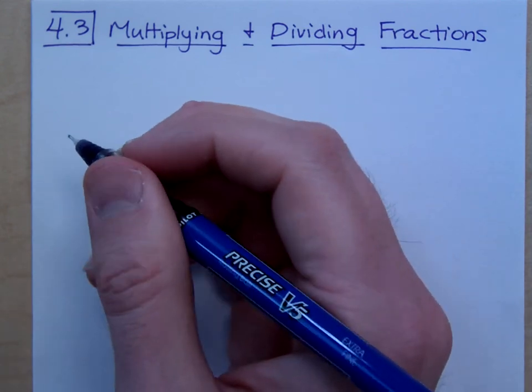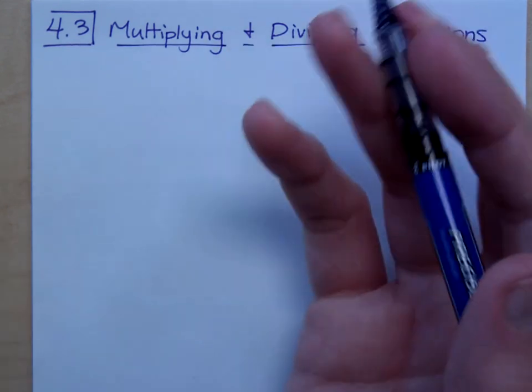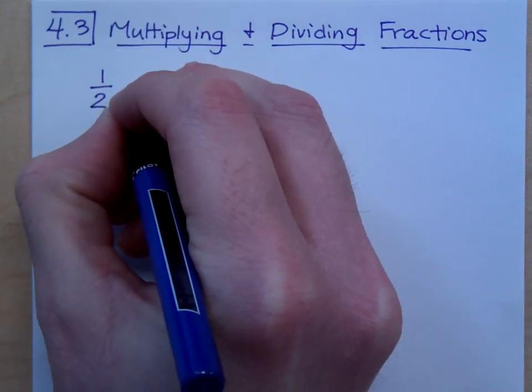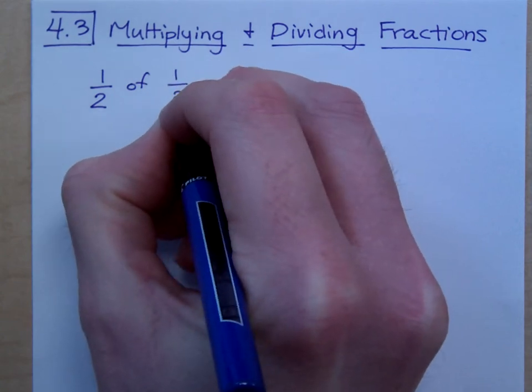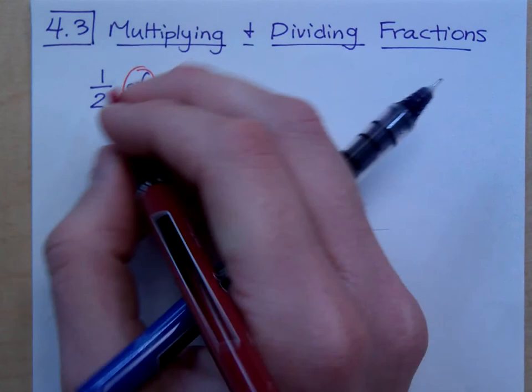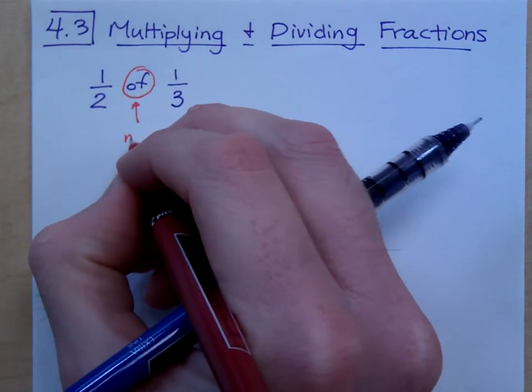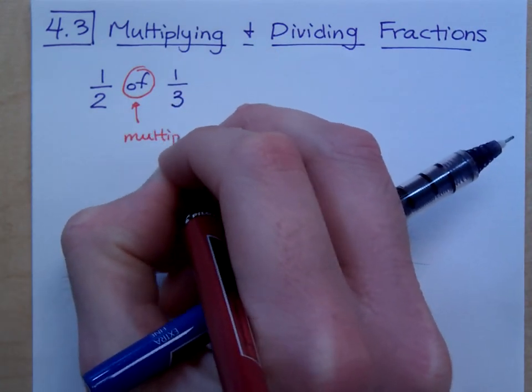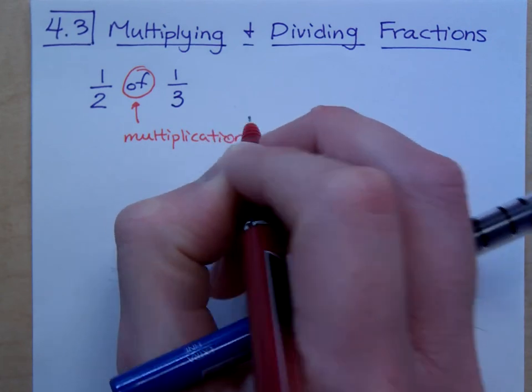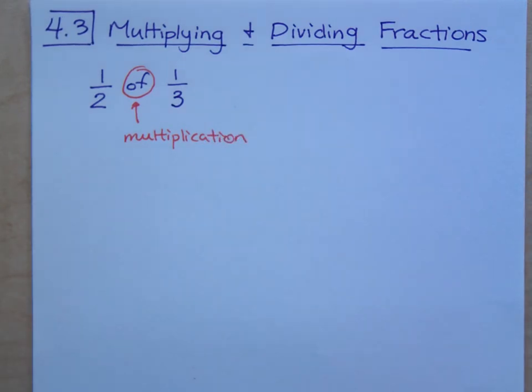Now, when you multiply a fraction times a fraction, you need to understand what it means. If we were to say this, if I say half of one-third, when we're talking about fractions and we have it like this, this means multiplication. When you have the word of used with fractions like this, it means multiplication. And to get a sense of what this looks like, think about food.